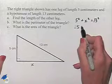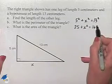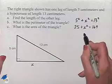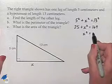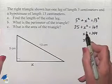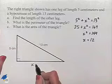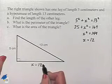We have 25 plus x squared equals 169. Subtracting 25 from both sides of the equation, x squared equals 144. The number which when squared gives us 144 is 12. So we know that our value for x is equal to 12 centimeters.